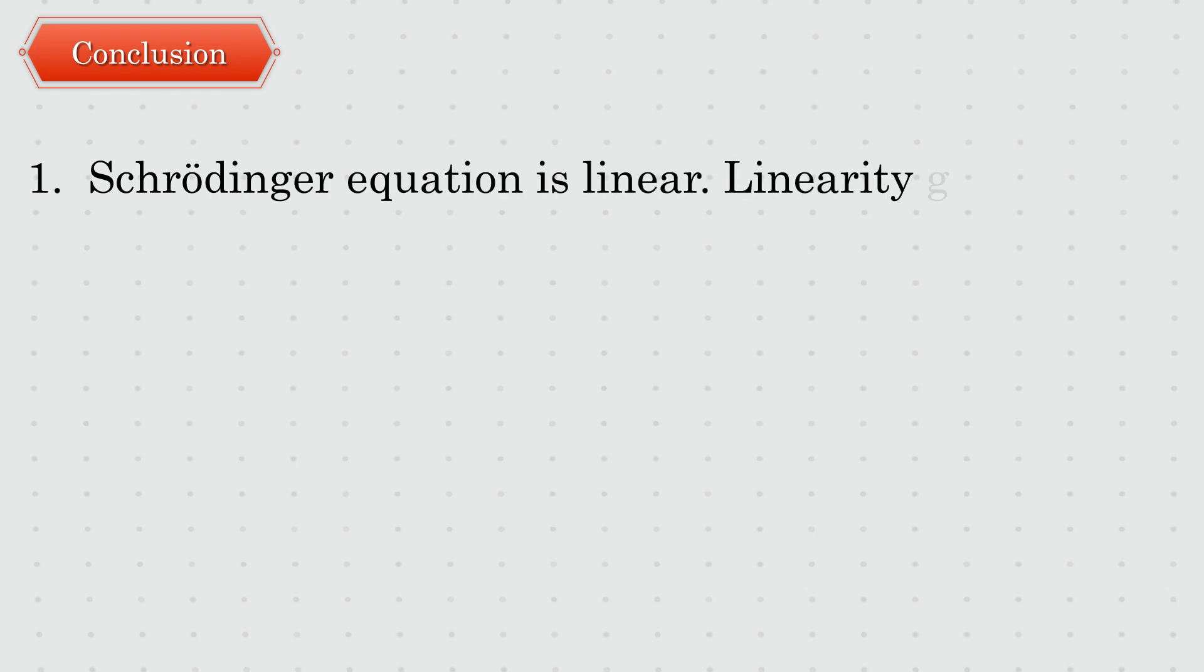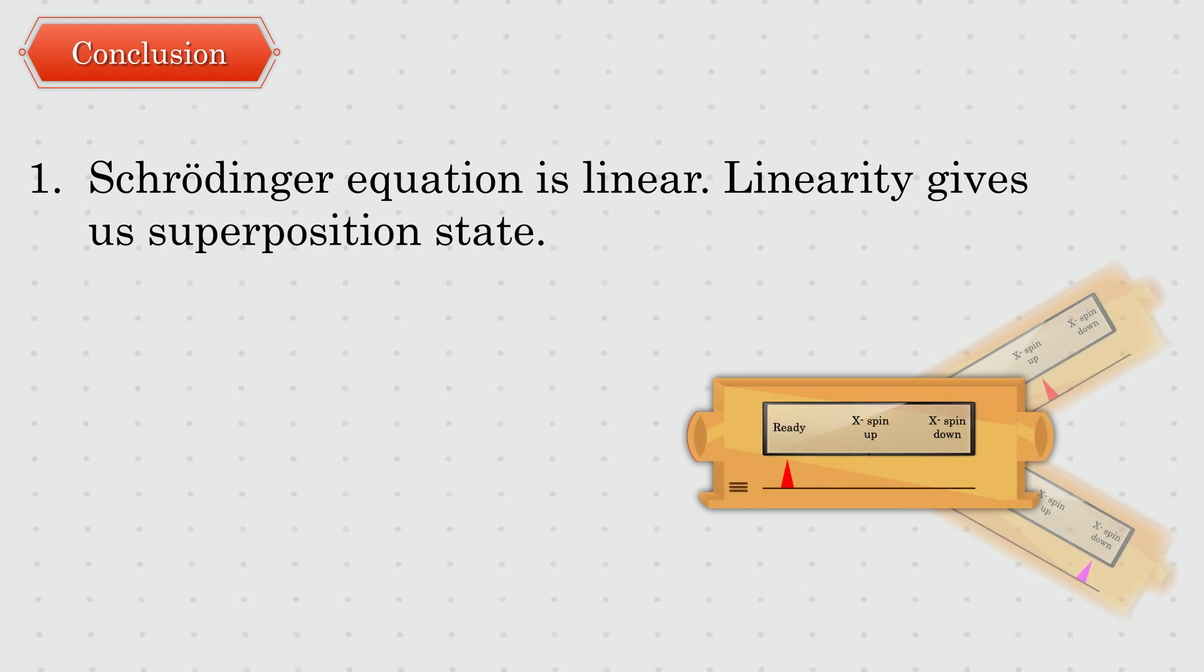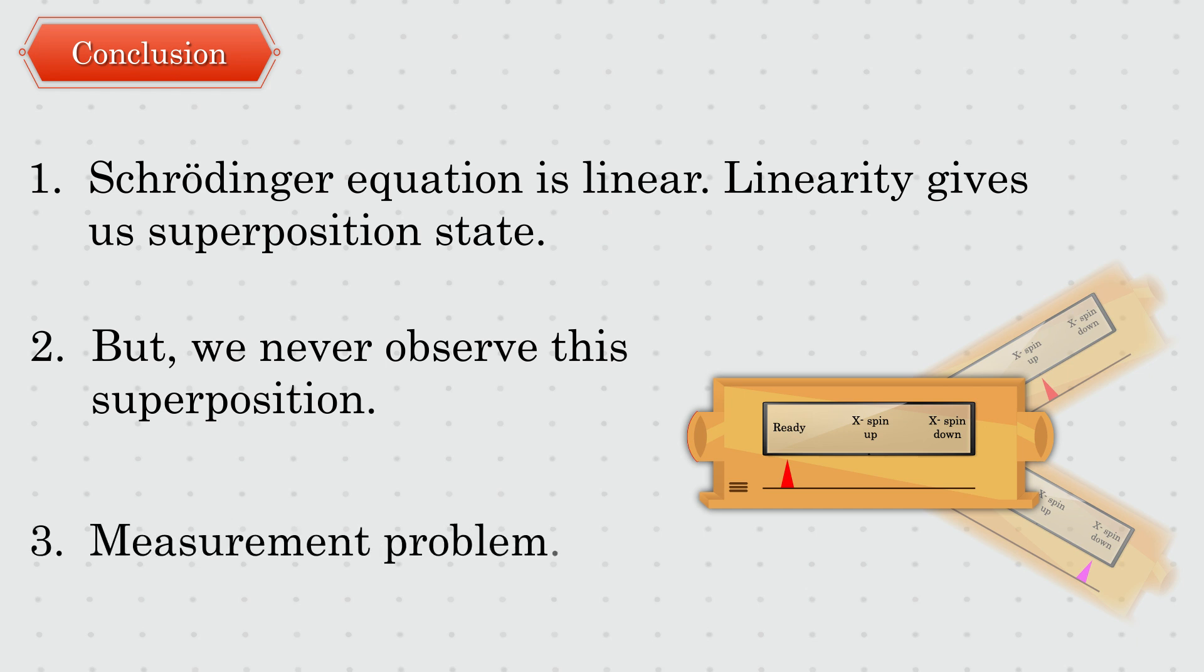Let's conclude the video with key points. Schrödinger equation is linear. This linearity gives a superposition state. This superposition state is a valid state according to quantum mechanics. While we never observe the superposition state, it does affect the statistics we make in our lab. This is a version of the infamous measurement problem, and Schrödinger's cat is a popular example of this.